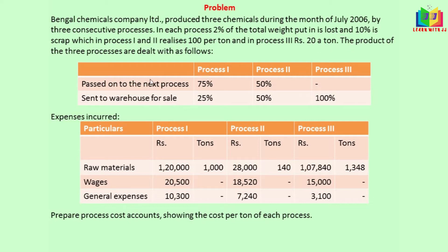The output of the product was passed on to the next process and partially sent to warehouse for sale — the full output is not transferred to the next process. For process 1, 75% is transferred to the next process and 25% of the output is sent to warehouse for sale. For process 2, 50% is transferred to the next process and 50% is sent to sale. At the end of the third process, everything is sent to the warehouse for sale.